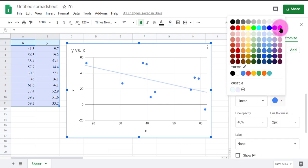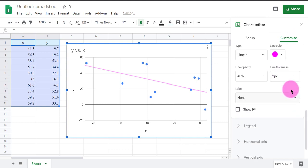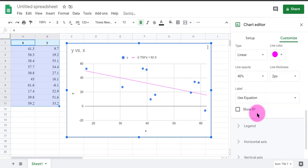I'm going to give it a new color. We still need the equation of the line, and that's going to be found under label. Use equation. While I'm at it, I'm going to show the r-squared value.